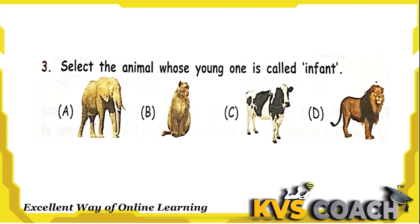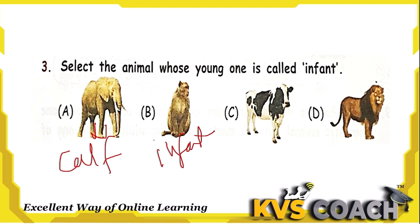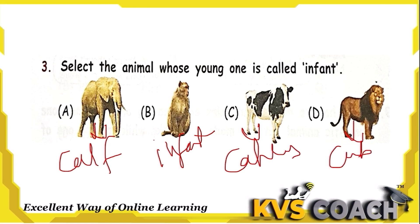Question 3: Select the animal whose young one is called an infant. Elephant baby is called a calf, monkey baby is called an infant, cow baby is called a calf, and lion baby is called a cub. So infant is the baby of monkey — option B is the right answer.